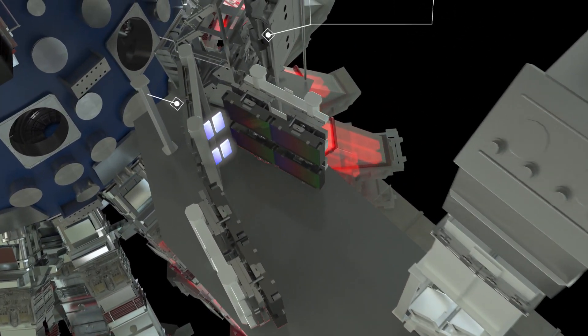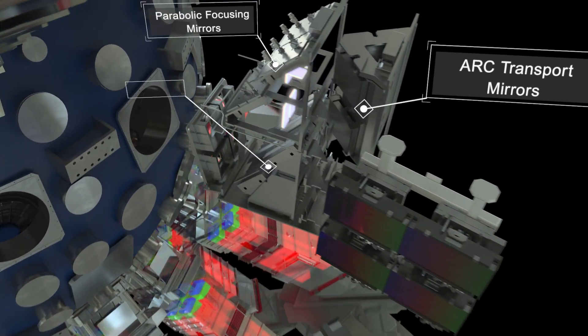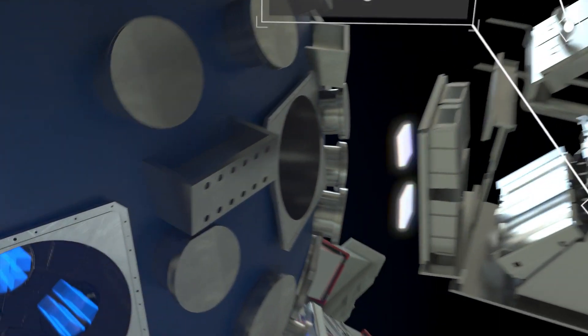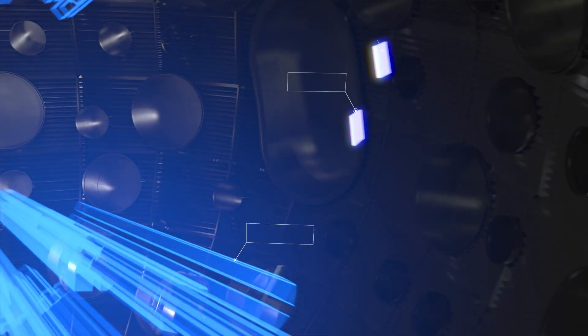The compressed beamlets travel to focusing and pointing mirrors, which narrow down and aim them into the target chamber and at the ARC targets.